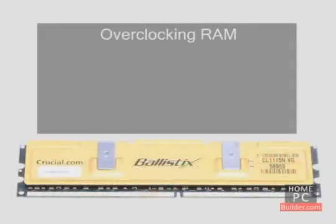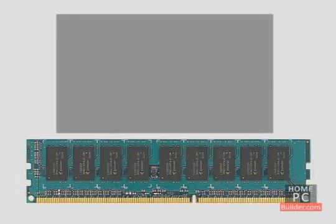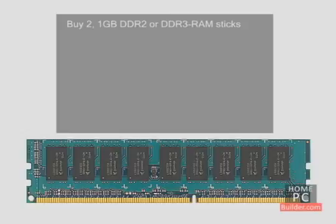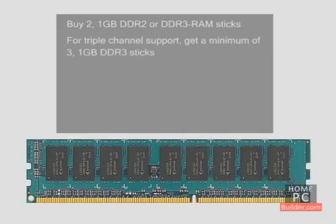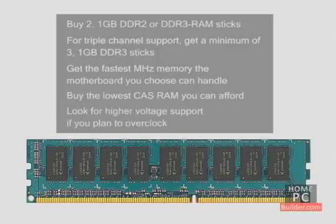Keep in mind that overclocking the RAM will increase heat, so look for RAM with built-on heat sinks, also called heat spreaders, if you plan to overclock. When purchasing your computer's memory, look for two 1 GB minimum DDR2 or DDR3 sticks in a package to enable dual-channel. If the motherboard supports triple-channel, get a minimum of three 1 GB DDR3 sticks. Get the fastest MHz memory the motherboard can handle, buy the lowest CAS RAM you can afford, and look for higher voltage support if you plan to overclock.